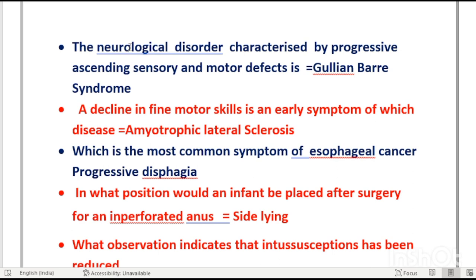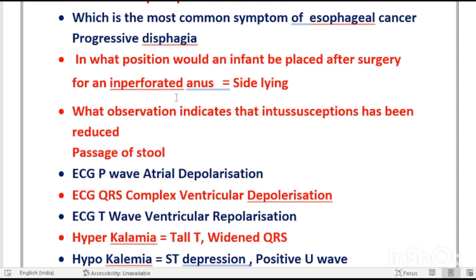A decline in fine motor skills is an early symptom of amyotrophic lateral sclerosis (ALS). The most common symptom of esophageal cancer is progressive dysphagia — difficulty in swallowing — because the esophagus narrows progressively. After surgery for imperforate anus, the infant is placed in a side-lying position. Passage of stool indicates that intussusception has been reduced.